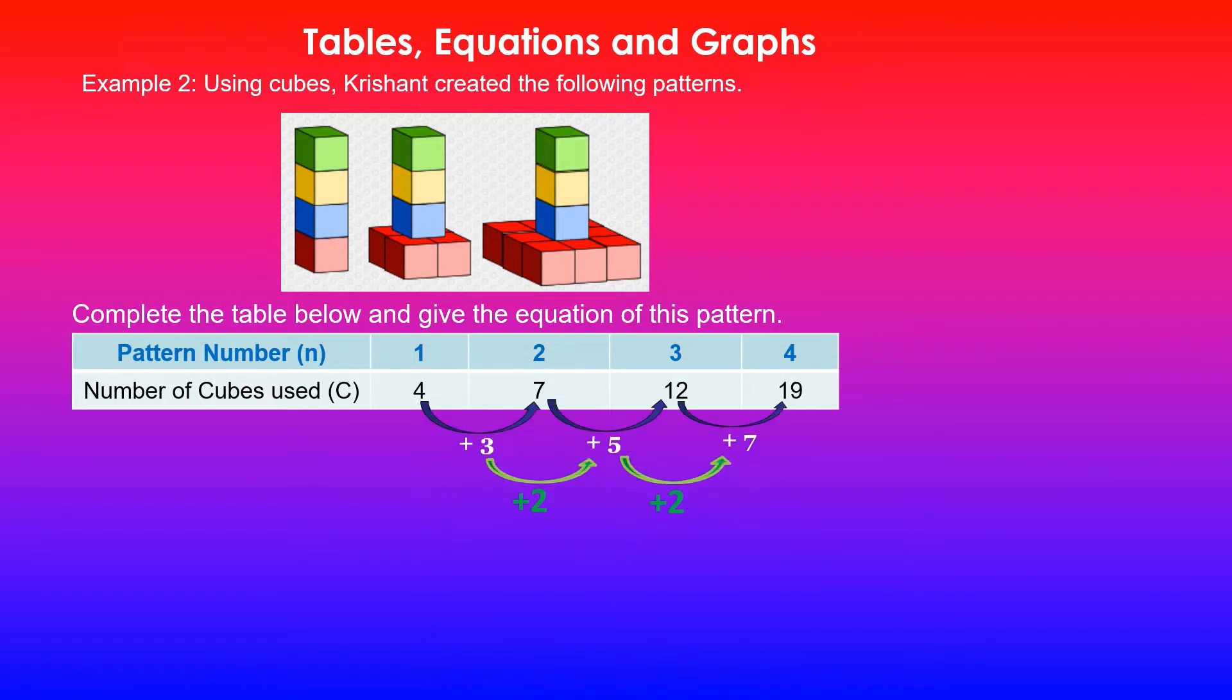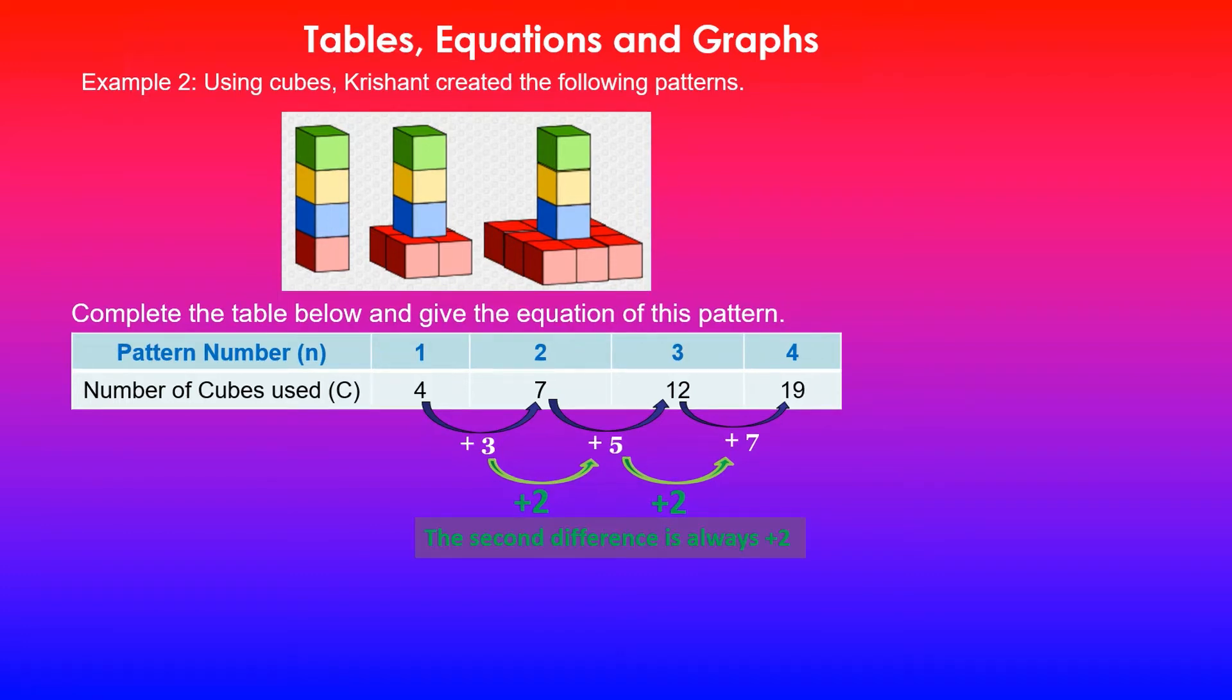In this case, we can see that each time the first difference is not constant because it goes up by 3, then the next one is 5, 7, and so forth. But the second difference is plus 2 each time, so that remains constant. That's telling us that this is a quadratic pattern because the second difference is always plus 2 and it is a constant in this case.